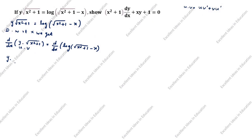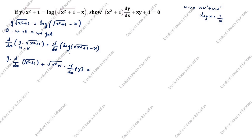We will split as per this formula. u is y, v is √(x²+1). So v' = d/dx of √(x²+1), and u' = d/dx of y. For the right side, using d/dx[log x] = 1/x, we write 1/(√(x²+1) − x) times the derivative of (√(x²+1) − x).